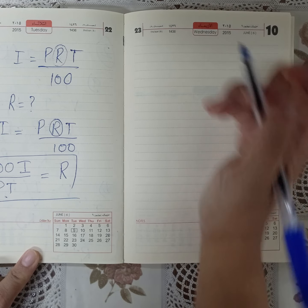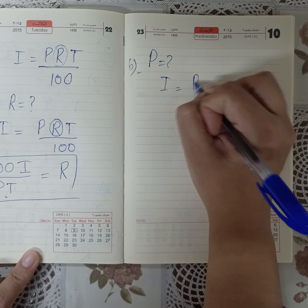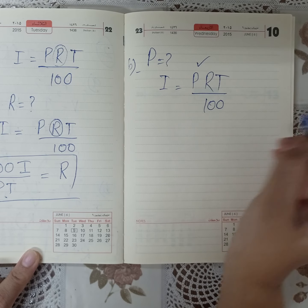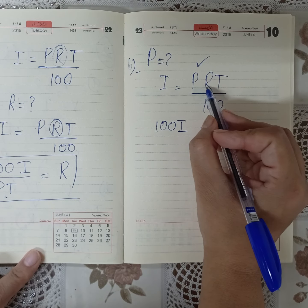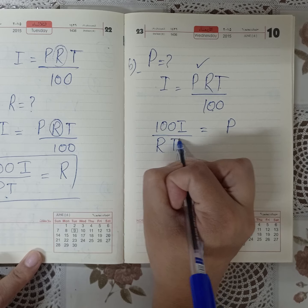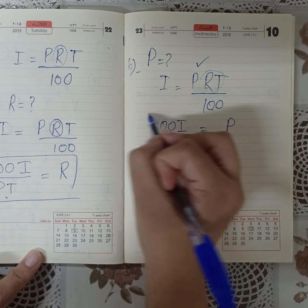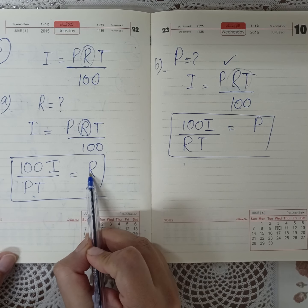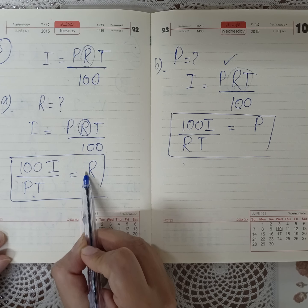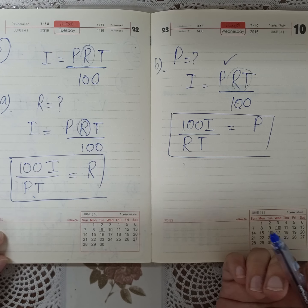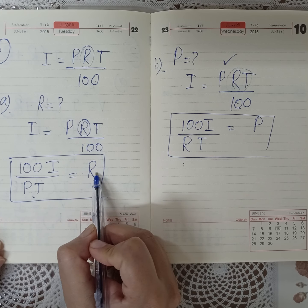Part b of question 3: find p from I = prt / 100. The 100 will multiply on the other side giving 100I, and rt being multiplied will divide on the other side: p = 100I / rt. Comparing the two formulas, we can simply switch the places of p and r to get from one formula to the other without repeating all the working.